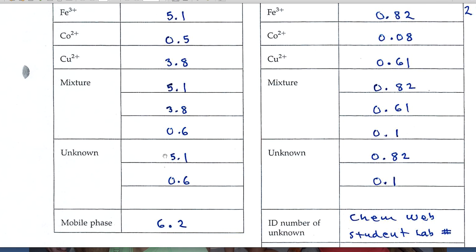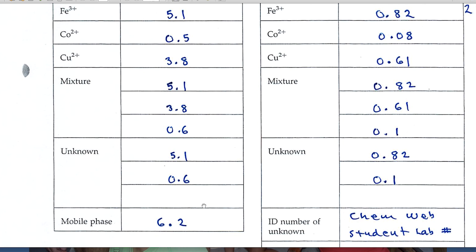In the unknown, it could be that maybe your unknown only has one component and you'd only see one spot, only have one distance to measure. Or in this case, I've recorded two distances to the tenth. And if you had three unknowns, three ions in your unknown, then you'd have three distances to record.